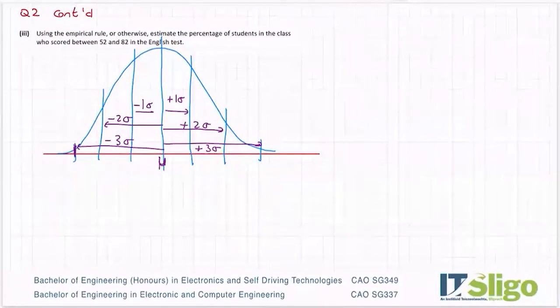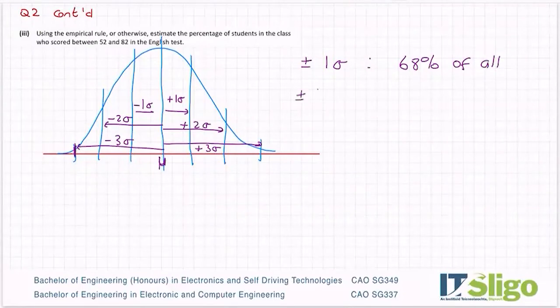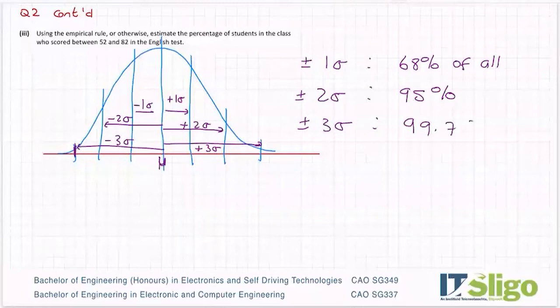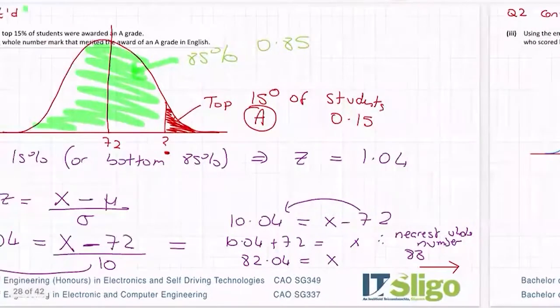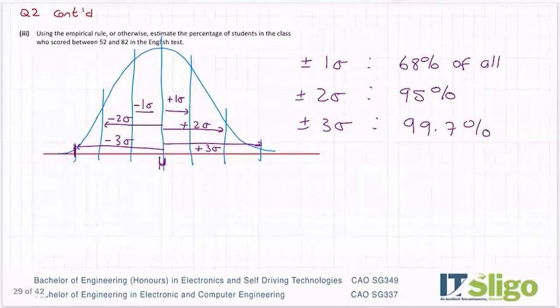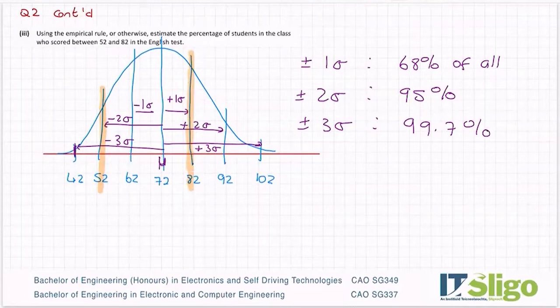If you remember the percentages, plus or minus one standard deviation is 68% of everything. Plus or minus two standard deviations, 95% of everybody will fall between that. And three standard deviations, 99.7%. And you've got to know these percentages here. So that's the empirical rule. Let's have a look at it for English. Our mean for English was 72 and our standard deviation was 10. So 72, 82, 92, 102, 62, 52, 42. And in this question, we want to look at from 52 to 82.